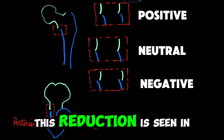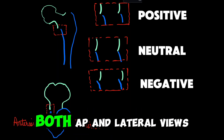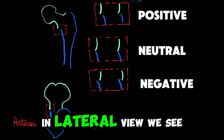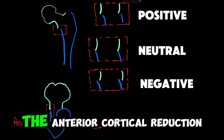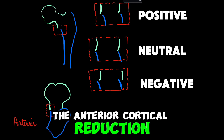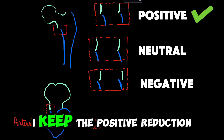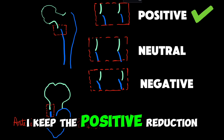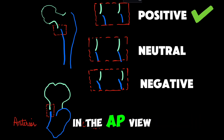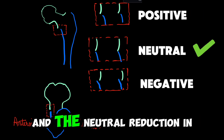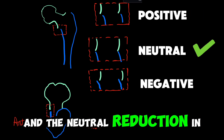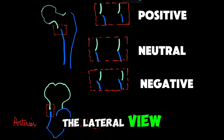This reduction is assessed in both AP and lateral views. In the lateral view we assess the anterior cortical reduction. What I do is keep positive reduction in the AP view and neutral reduction in the lateral view.